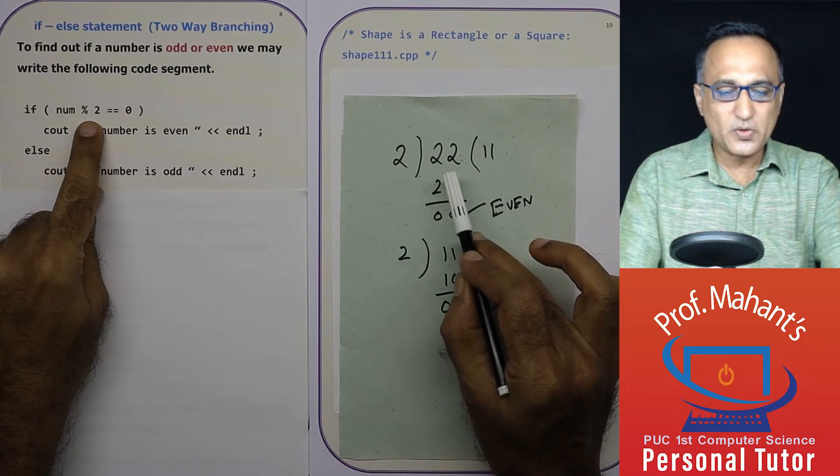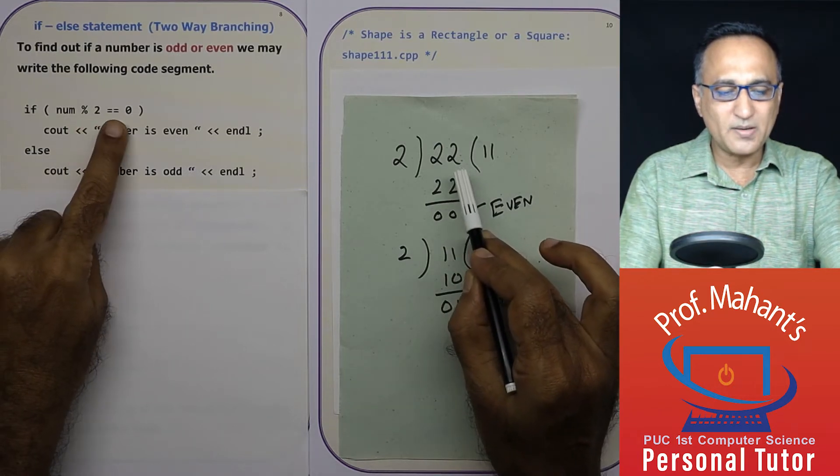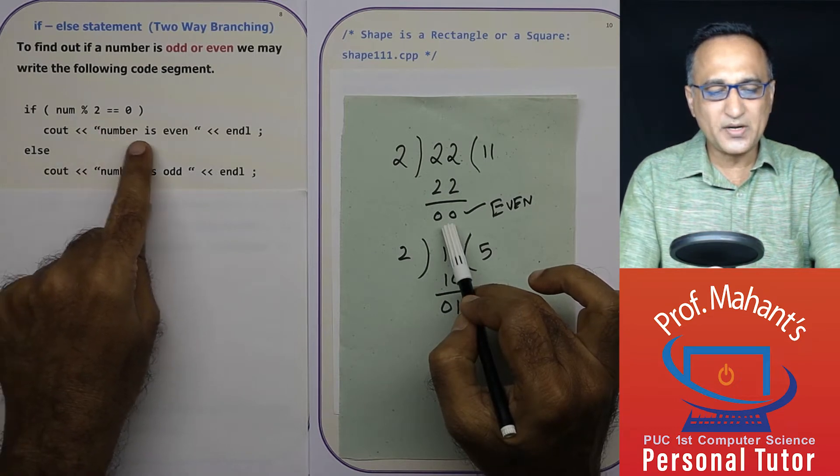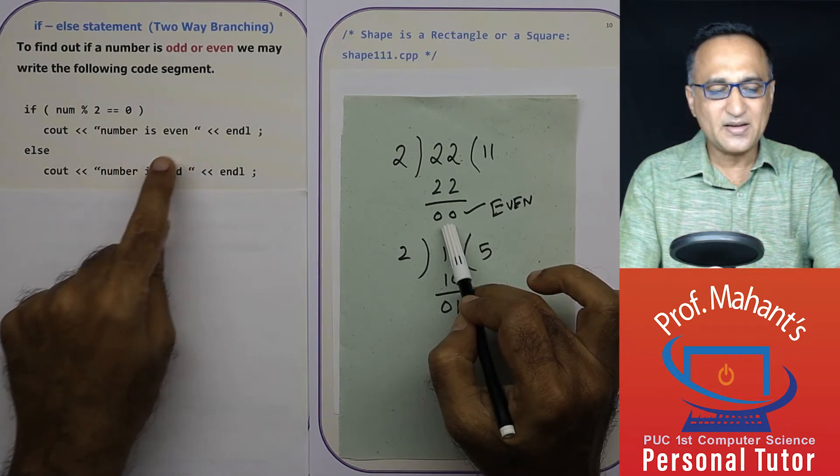So let's say the number is 22. 22 mod two, the remainder happens to be zero. So in this case, it will say 22 or number is an even number and it will come out.